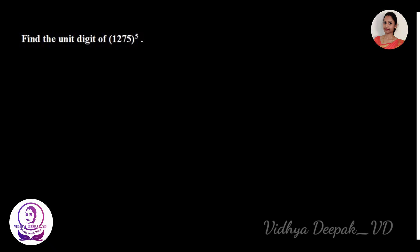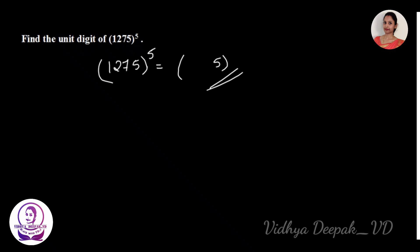Hello everyone, today we will see how to find the unit digit of a given number — 1275 to the power 5. Whenever the last digit is 5, the unit place of the answer will be 5 itself, regardless of the power. So the unit digit of 1275 to the power 5 is simply 5.